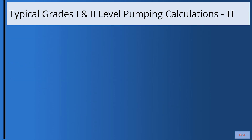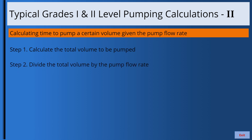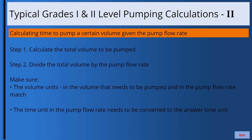In the second type of pumping problem, you calculate the time to pump a certain volume given the pump flow rate. Typically, first calculate the total volume to be pumped, then divide by the pump flow rate, making sure volume units and time units match. Examples of these problems are provided in the handout — study them to understand the concepts.